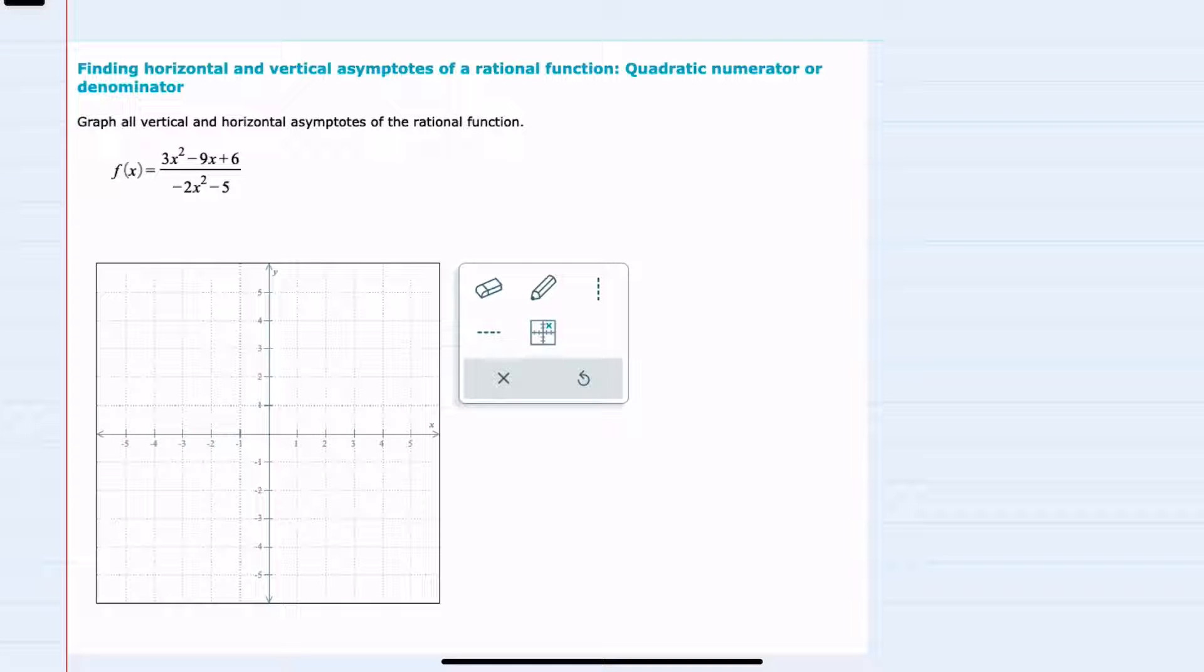In this video, I'll be helping you with the ALEKS problem type called finding horizontal and vertical asymptotes of a rational function with quadratic numerator or denominator. We're given our function here, f(x). We're asked to graph both the vertical and horizontal asymptotes if they exist.